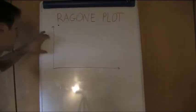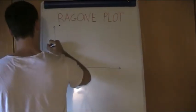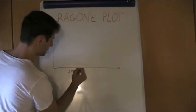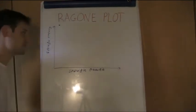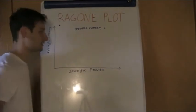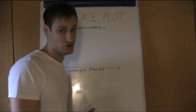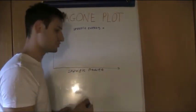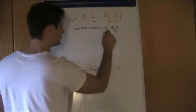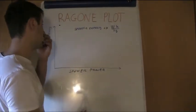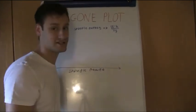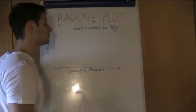The Ragone plot has on the y-axis the specific energy, and on the x-axis the specific power. The specific energy represents the total amount of energy stored inside a battery or device. It is measured as watt-hours per kilogram — so energy per unit of weight, since this is a specific energy. The energy density, by contrast, is energy per unit of volume, while specific energy is energy stored per unit of weight, in this case kilograms.